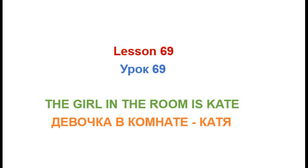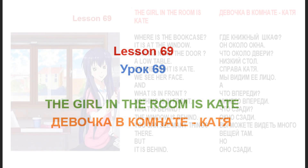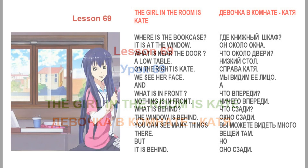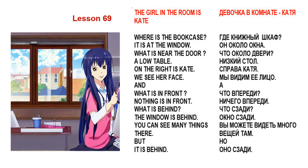Lesson 69. The girl in the room is Kate. Where is the bookcase? It is at the window. What is near the door? A low table.